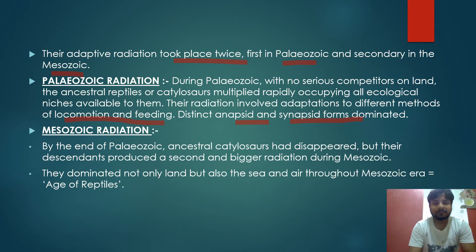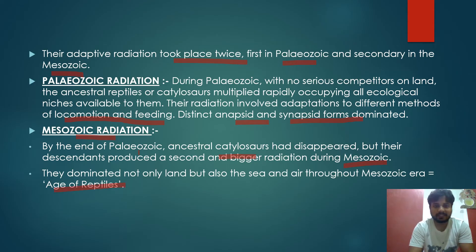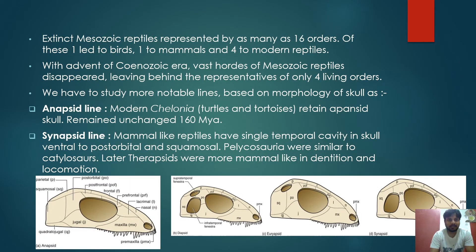The second adaptive radiation occurred during the Mesozoic. By the end of the Paleozoic, ancestral cotylosaurs had disappeared, but their descendants produced a second, bigger radiation during the Mesozoic — known as the Age of Reptiles. Reptiles were found in almost every environment. Mesozoic reptiles were represented by as many as 16 orders, showing immense adaptive radiation. One line eventually converted into birds, which is where Archaeopteryx fits.